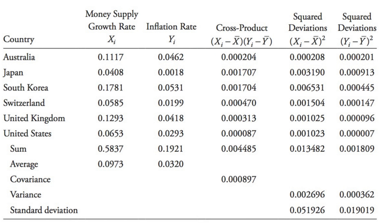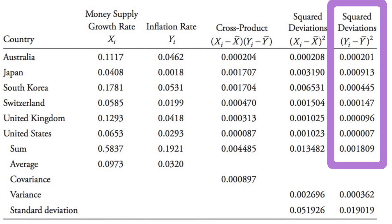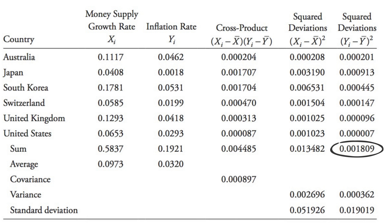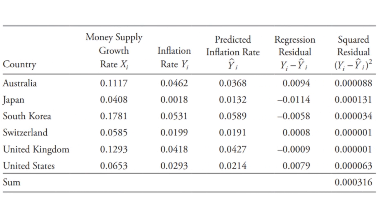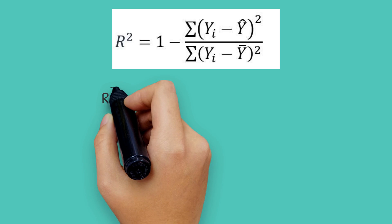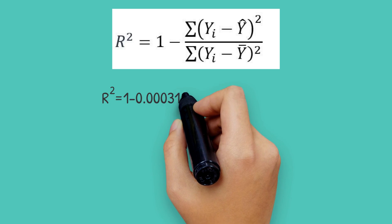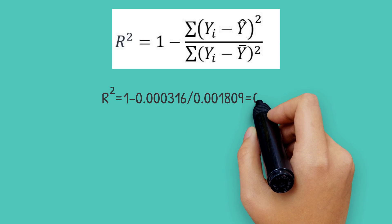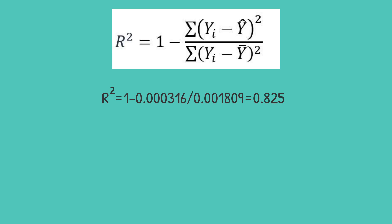Continuing our example of predicting inflation using money supply, the last column in the table shows the squared deviations from the mean, and the sum of those squared deviations is 0.001809, which is the total variation. Recall that when calculating the standard error of estimate, we calculated the sum of squared deviations from the predicted value of y, which was 0.000316 — the unexplained variation. Plugging in the numbers, r-squared equals 1 minus 0.000316 divided by 0.001809, which equals 0.825.